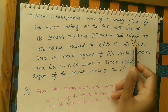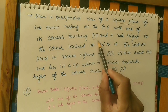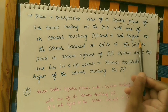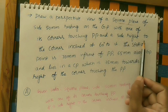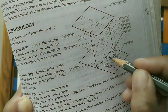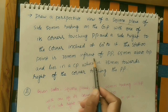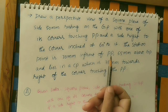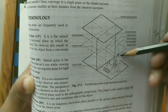A side to the right of the corner that is touching PP is inclined at 60 degrees to the picture plane — so that side makes 60 degrees with PP. After that, the station point is 70 mm in front of PP, meaning the observer is 70 mm from the picture plane.